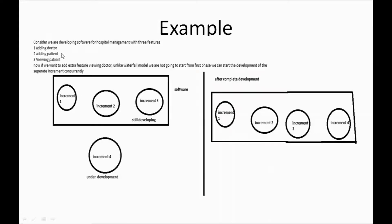Increment 1 is the first feature — adding a doctor. Increment 2 is the second feature — adding a patient. Increment 3 is the third feature — viewing the patient. Each feature is developed as a separate increment. Importantly, while developing increment 1, you can also develop increment 2 at the same time. While developing increment 2, you can develop increment 3 in parallel — you do not need to wait until increment 1 is finished to start increment 2.